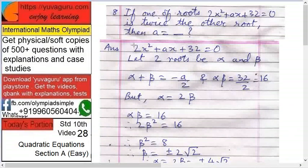What is the logic behind this? For equation ax² + bx + c = 0, sum of the roots is minus b upon a and product of the roots is c upon a.